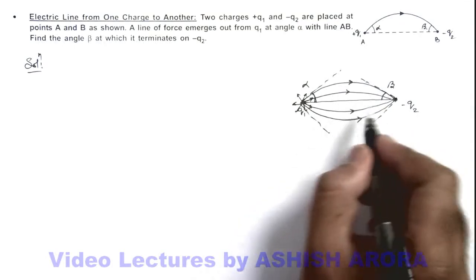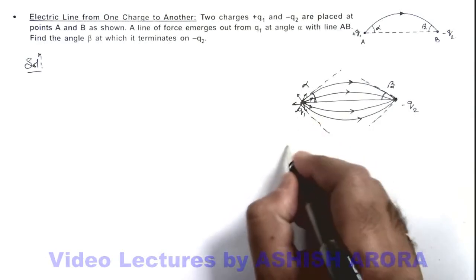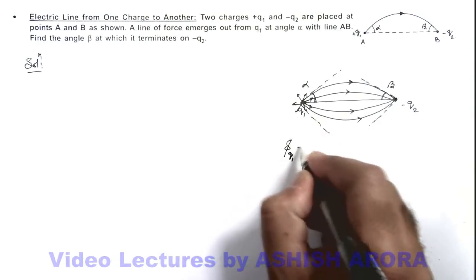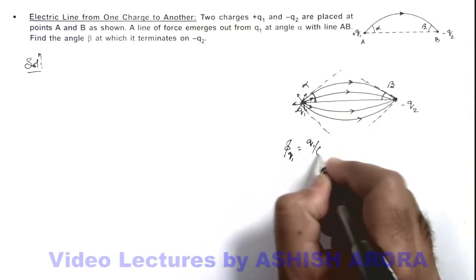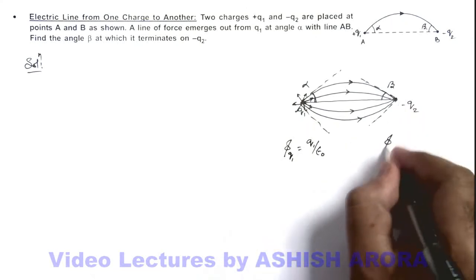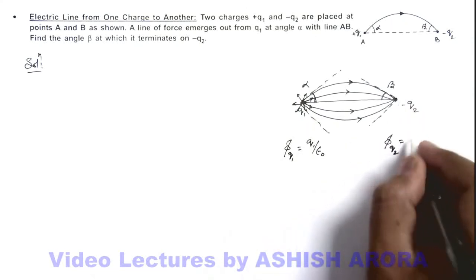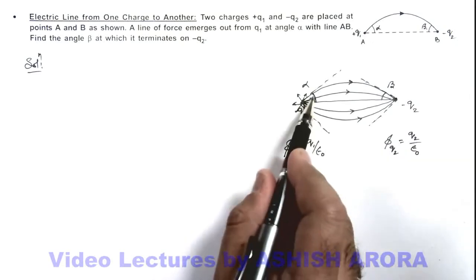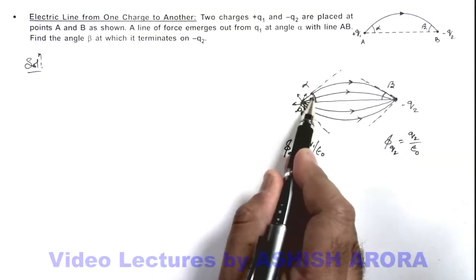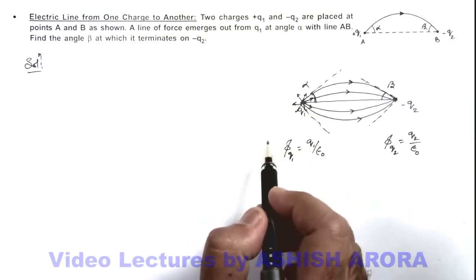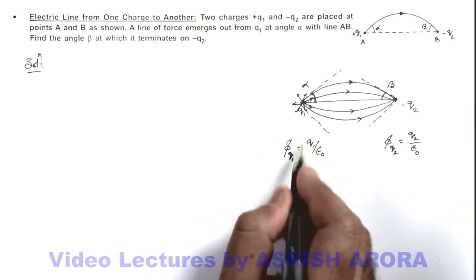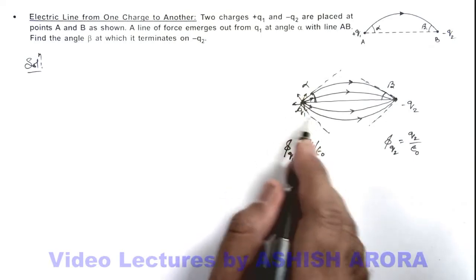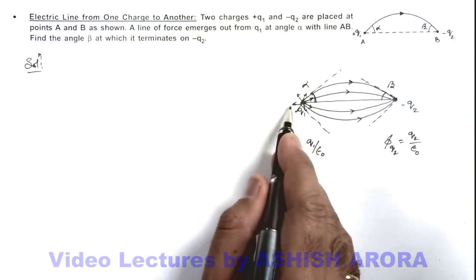Now in this situation, total flux which is originated from q1 is q1 by epsilon not, and total flux which terminates on q2 will be q2 by epsilon not. So we can find out how much flux will be coming out through this half angle alpha. This total flux is spread uniformly in a solid angle 4 pi.